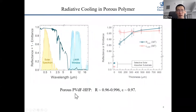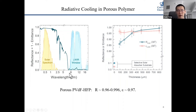Optical measurements confirm this. In the solar spectrum, the reflectance is very high, very close to 100%. In the infrared part, the thermal emittance is pretty high and the reflectance is nearly 0%. We achieve 96% solar reflectance at a thickness of 300 micrometers, and almost 99% solar reflectance when the thickness is increased to 0.8 millimeters — meaning it absorbs almost no sunlight.